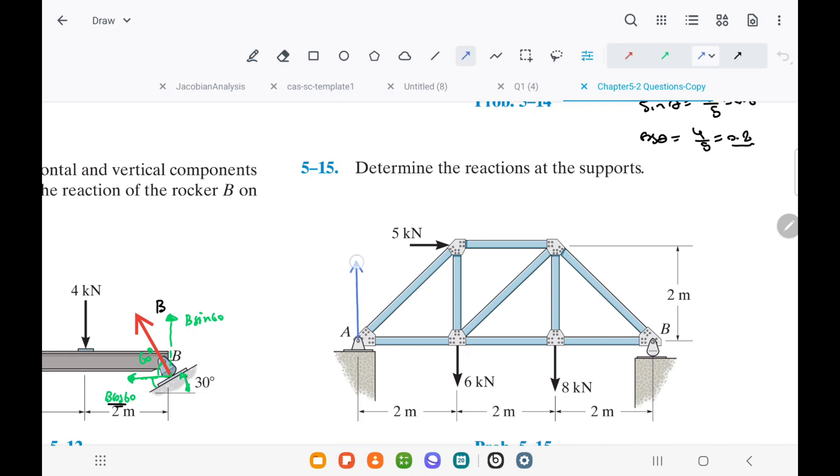At joint A, there is a revolute joint, so we can expect two reaction forces, represented as Ax and Ay. At joint B, there is a roller joint, so we can expect only one perpendicular force, represented as B.